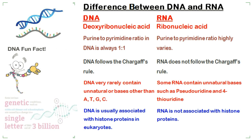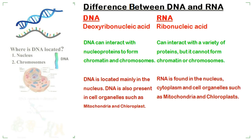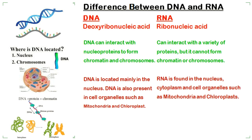DNA very rarely contains unnatural bases other than A, T, G, C, while some RNA contain unnatural bases. DNA is usually associated with histone proteins in eukaryotes, while RNA is not associated with histone proteins. DNA can interact with nucleoproteins to form chromatin and chromosomes, while RNA can interact with a variety of proteins but cannot form chromatin or chromosomes.